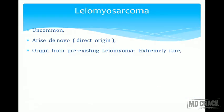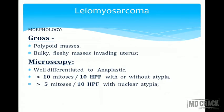The malignant counterpart of leiomyoma is leiomyosarcoma — a very highly aggressive, uncommon tumor. Importantly, leiomyosarcomas arise de novo; they are NOT preceded by leiomyomas. Leiomyomas do not transform into leiomyosarcomas in most cases — leiomyosarcoma arises de novo without a leiomyoma precursor. Grossly, they appear as huge bulky polypoid masses with a fleshy appearance, extensive areas of hemorrhage and necrosis, invading the uterus.